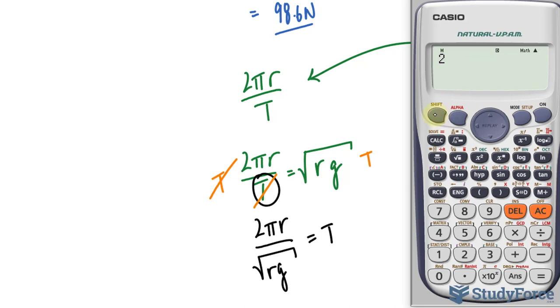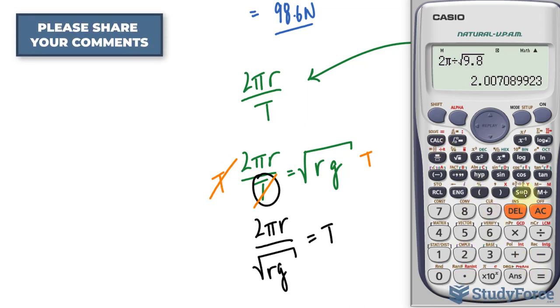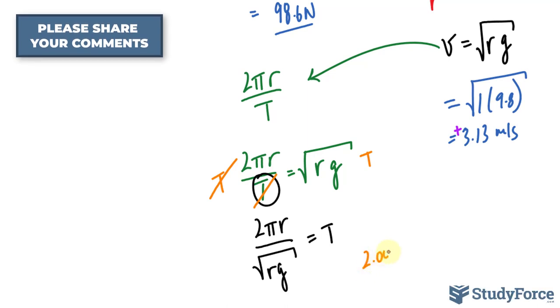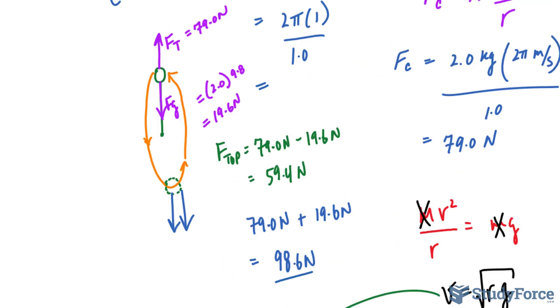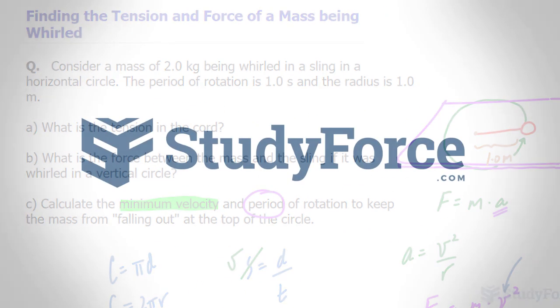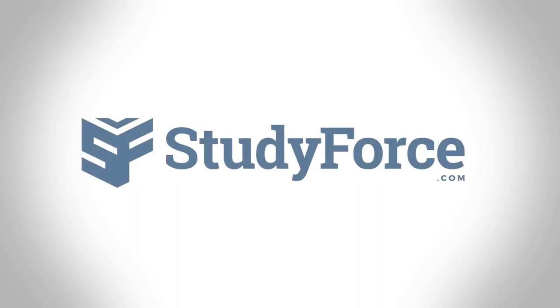So I have 2 times pi times 1, which is the radius, I don't need to write that in, divided by the square root of 9.8, and we end up with 2 seconds. Therefore, any period over 2 seconds will cause this mass to fall out of this circle. Anything less than 2 seconds will maintain that circle. And so there you have it, that is how to find the tension and force of a mass being whirled.